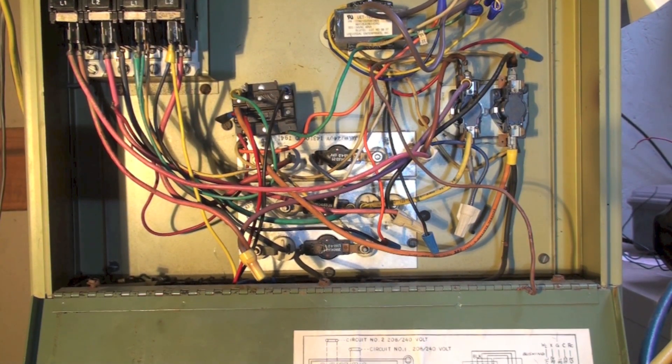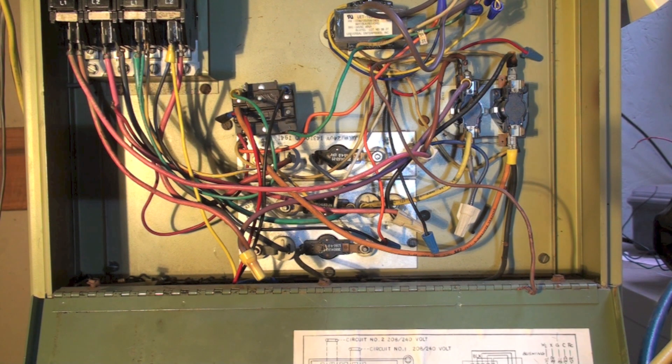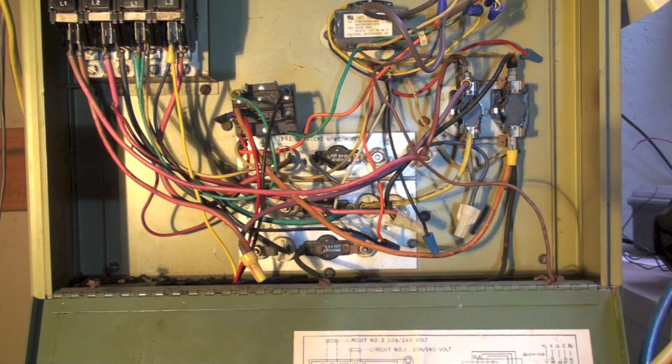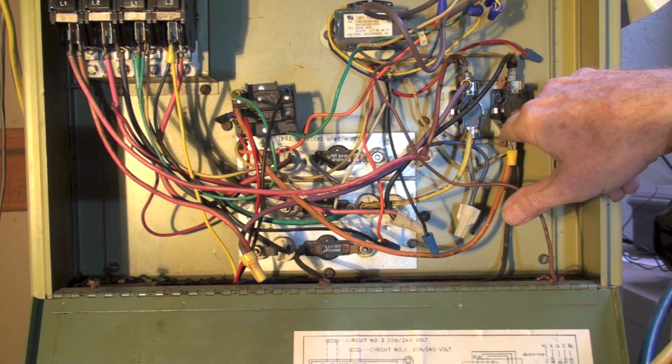Here we have an electric furnace, a fairly standard one. It's 15 kW because it has three elements at 5 kW each. It has a sequencer here, which is a stack type sequencer, and it has a few problems. I'm going to fix them, but mostly I'm going to get rid of this sequencer and put a contactor in there.